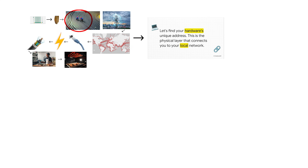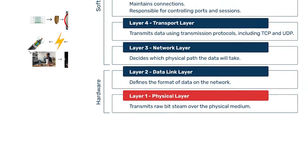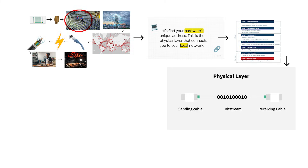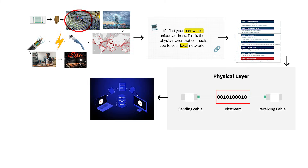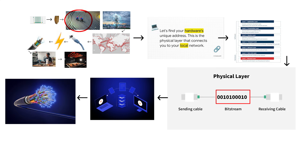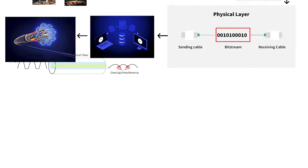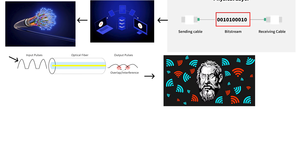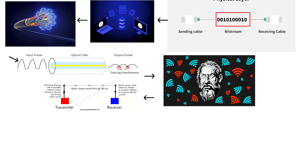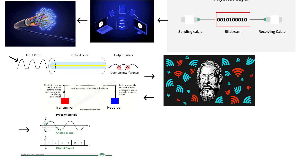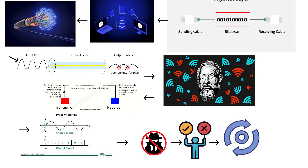Here's what the physical layer actually does. It's Layer 1 of the OSI model, and its only job is converting your computer's digital data — those 1s and 0s — into physical signals that can travel through cables or air: electrical pulses through copper wire, light pulses through fiber optic, or radio waves through the air for Wi-Fi. Then on the receiving end, it converts those signals back into 1s and 0s. That's it. No intelligence, no decision making, just pure conversion.